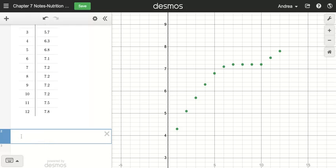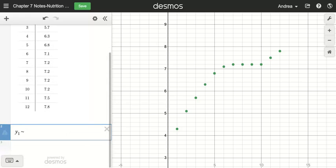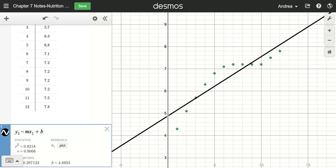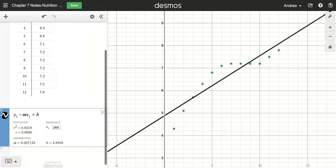I'm going to go ahead and click on the next line and I'm going to enter in my equation. So I want to enter in y1 tilde. That's the little squiggle button up by the number one on your keyboard. mx1 plus b. So I'm just entering the slope intercept form of the equation. Now once I do that, I can go ahead and I can see that I've got my line. It's best fitted through the data points.